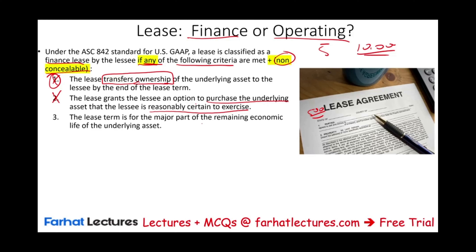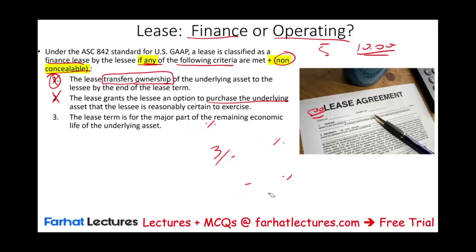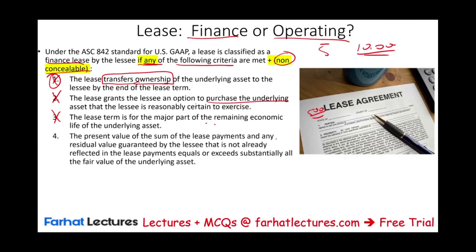The third condition: the lease term is for the major part of the remaining economic life of the asset. We quantify this as 75% or more of its life — you technically own the asset. For example, if you have the lease for three out of five years, that's 60%, which is not the majority. But if you have the lease for four years and the life of the asset is five years, that's 80% — you could meet this requirement and classify the lease as a finance lease. If not, we look at the fourth option.